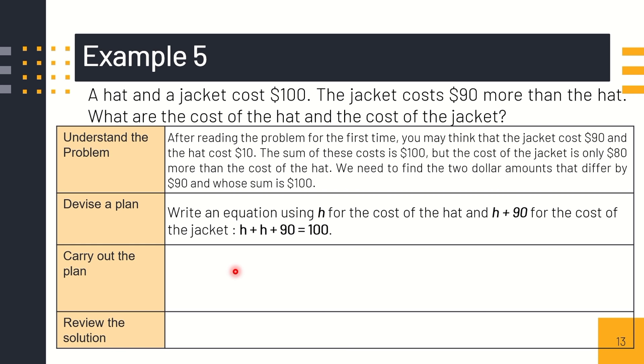For problems like this, we can represent them using variables. We can represent H as the cost of the hat, and H plus 90 as the cost of the jacket. It says the cost of the hat plus the cost of the jacket is equal to $100. If we're going to add, H plus H plus 90 equals $100. Or we can simplify, that is, 2H plus 90 equals $100. Move 90 to the right side. That is 100 minus 90, which is 10. Divide both sides by 2, the answer is 5.